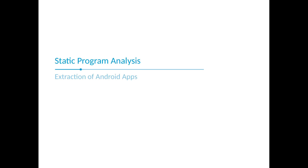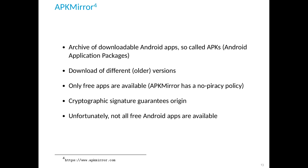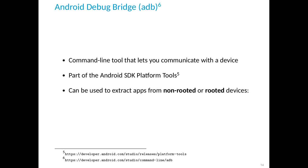For static program analysis, the first step is to get the app. There are different methods to extract an APK. The easiest is a website called APK Mirror — it's an archive of downloadable Android apps where you can download current and older versions, which is not possible with the Play Store. However, not all Android apps are available on APK Mirror due to its no-piracy policy. Another method is the Android Debug Bridge (ADB), a command-line tool that lets you communicate with your device, part of the Android SDK platform tools, and it can extract apps from non-rooted or rooted devices.